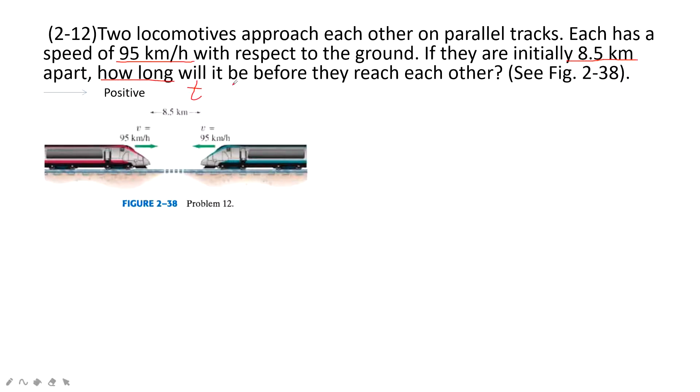When we solve this problem, we consider that velocity is a vector. It has a magnitude and also directions. We can give the direction of this one as positive, so this one's velocity is just negative 95 km per hour. And this velocity is 95 km per hour.